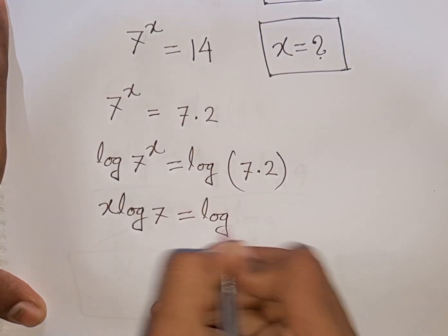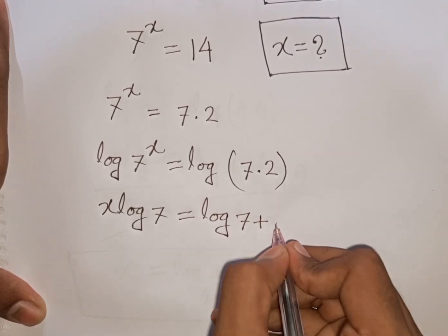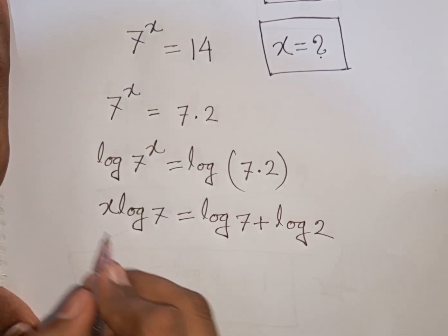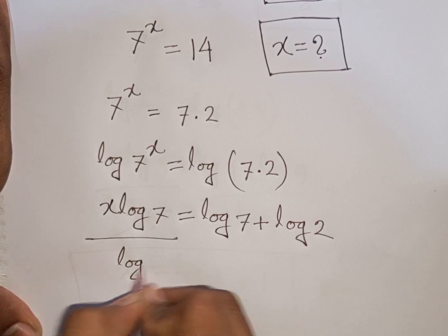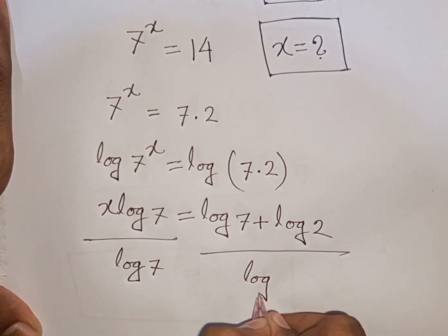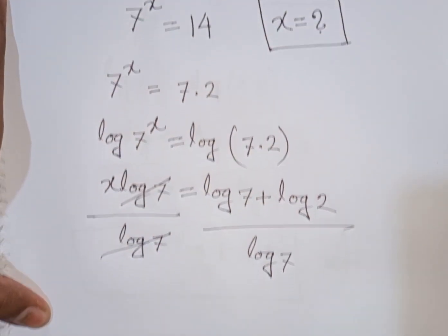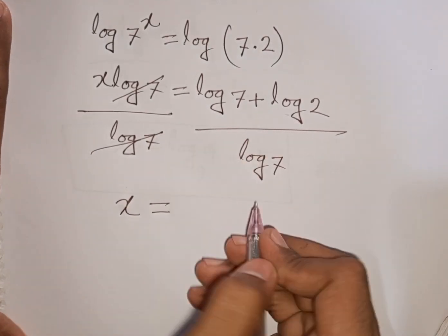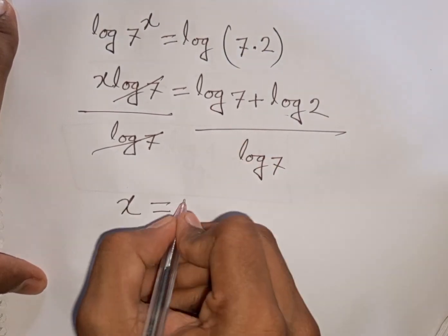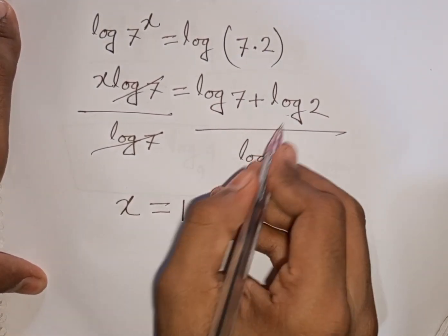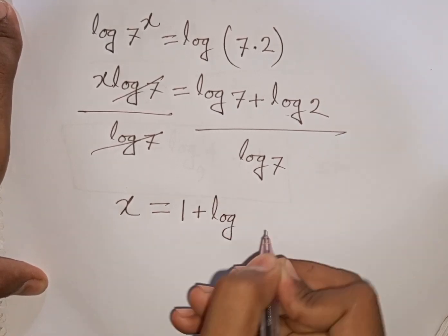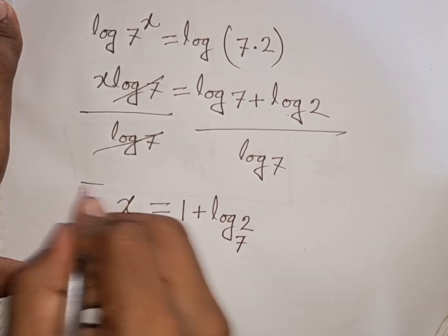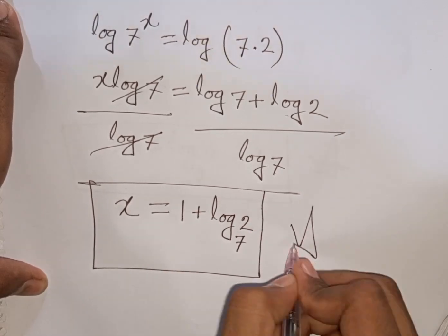That means x times log 7 equals log 7 plus log 2. We divide both sides by log 7: x equals (log 7 plus log 2) over log 7, which equals 1 plus log 2 over log 7. This can be written as 1 plus log base 7 of 2. So this is the value of x and our final answer.